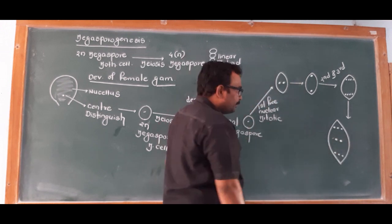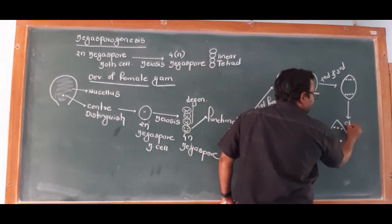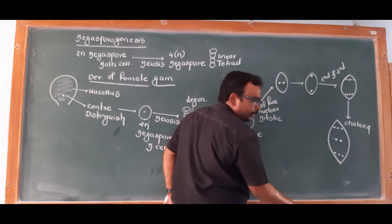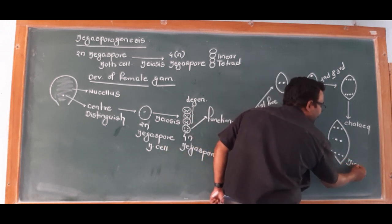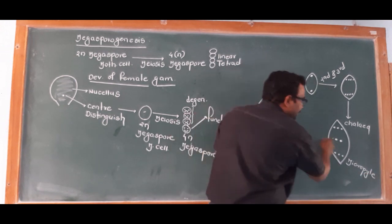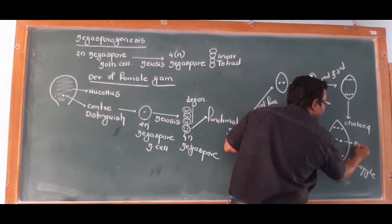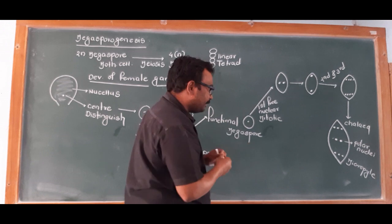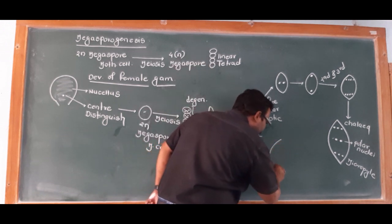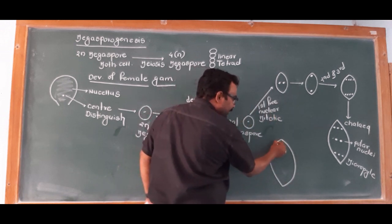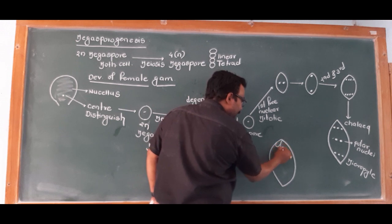After wall formation, two molecules come to the center as polar nuclei. The polar nuclei are in the center and they fuse. This represents the final embryo sac — the final female gametophyte. At the micropylar end, there are three cells.